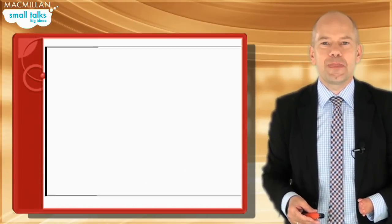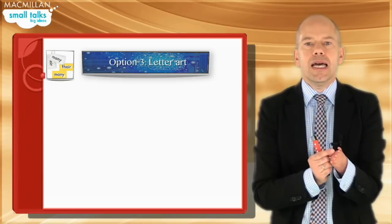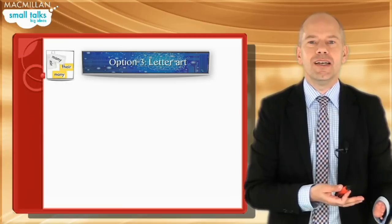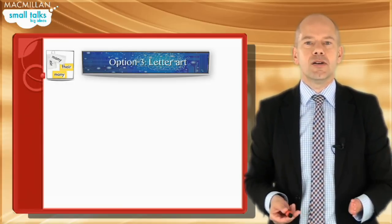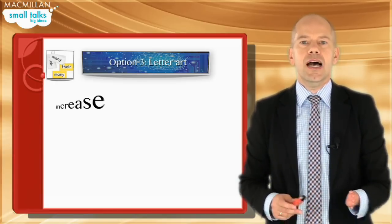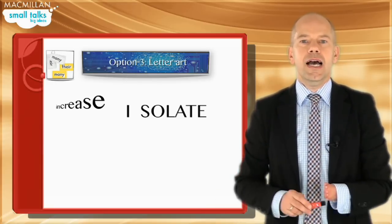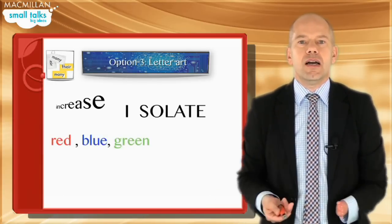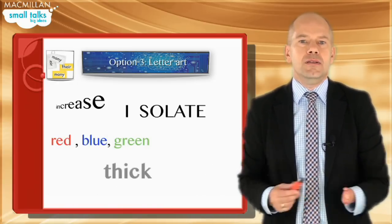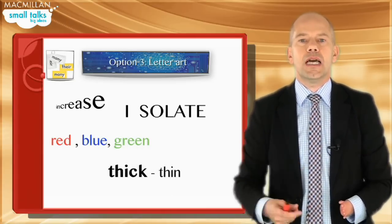Take a look at option number three. Option number three is about using the arrangement of the letters themselves. Why would that be important? Because it's a way to avoid endless translation. This word — do you need to translate? No, the shape itself tells you what it means. Instead of translating, you isolate the word itself. How about color adjectives? If they are color adjectives, you could record them in different colors. What about recording physical contrasts? It's adjectives, but why not use the shape of the font in order to communicate the meaning?